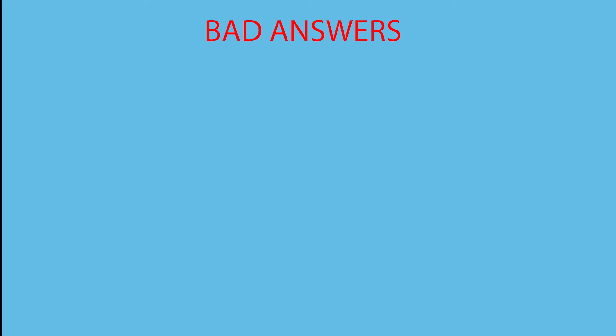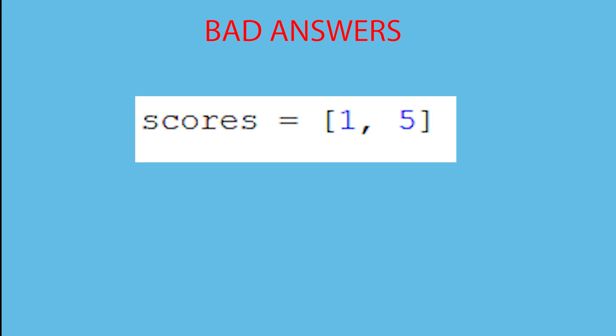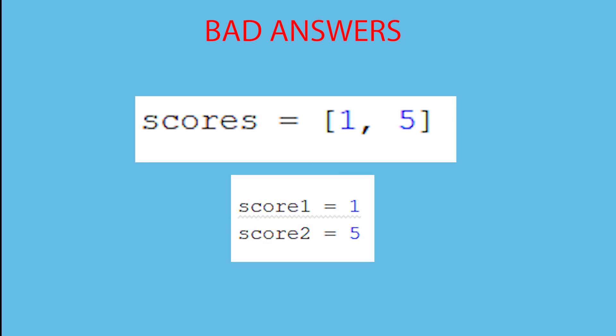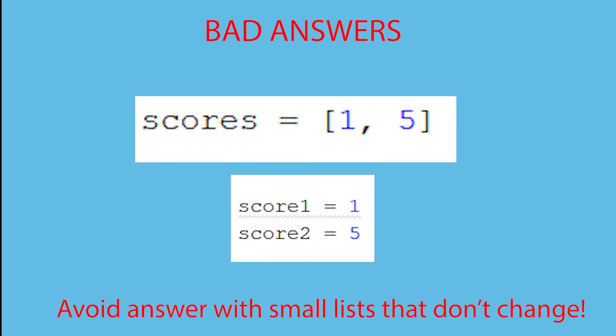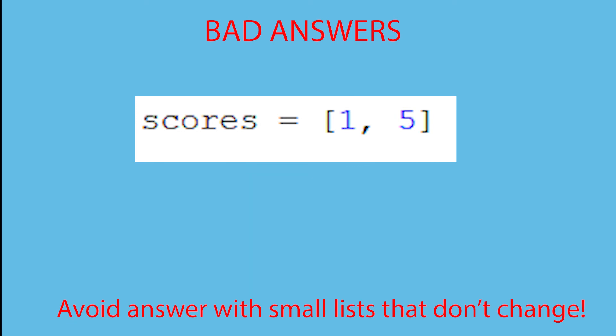Now I'll show some examples that will not score the point. The first bad example is using a list to keep track of score — the AP board gives this as an example of a bad use of a list with respect to complexity. In this example I have a two-item list: index zero is player one's score and index one is player two's score, as you might do in Pong. This is not better than two separate variables and the list might even be less readable. Avoid any lists where you only have one, two, or three items and the number of items never changes.